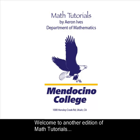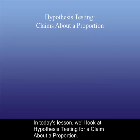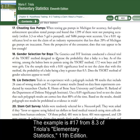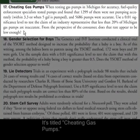Welcome to another edition of Math Tutorials. In today's lesson, we're going to take a look at Hypothesis Testing, Claims About a Proportion. The example is number 17 from 8.3 of Triola's Elementary Statistics 11th edition. It's titled Cheating Gas Pumps.